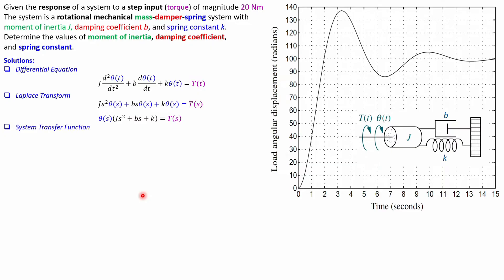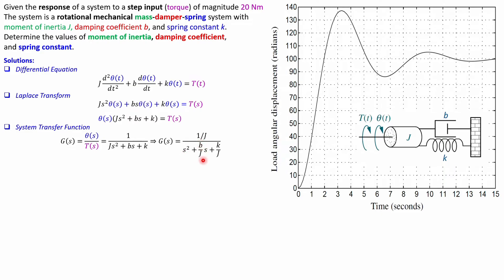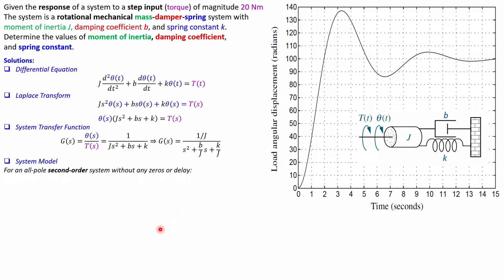The system transfer function is output over input — angular displacement theta over torque T. This gives 1 over the full denominator expression. Rewriting this with s squared plus a coefficient times s plus a constant makes it easier to identify the moment of inertia, damping coefficient, and spring constant. The general all-pole second order model has only poles and no zeros or delays.